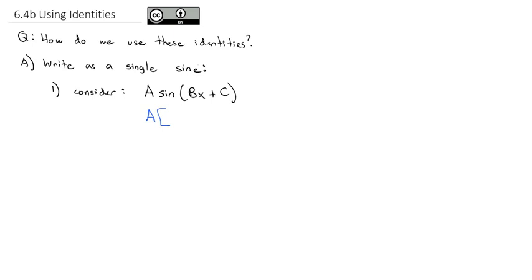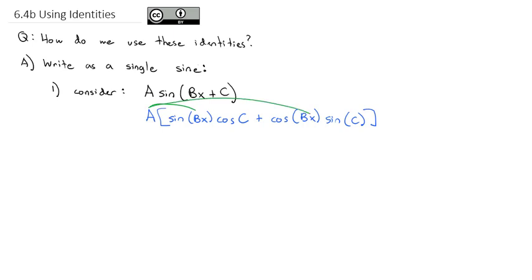We know the sine of a sum can be written as the sine of the first angle, bx, times the cosine of the second angle, c, plus the cosine of the first angle, bx, times the sine of the second angle, c. Next, I'm going to distribute the a through onto both parts, writing cosine c and sine c first. So we get a·cos(c)·sin(bx) + a·sin(c)·cos(bx).